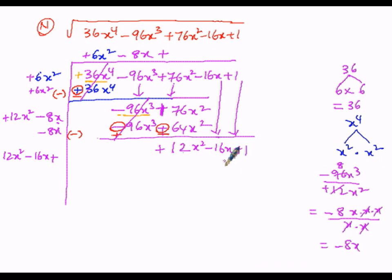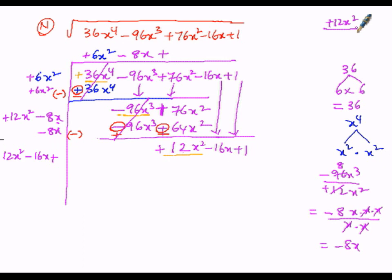In the new dividend, the first term is plus 12x squared. The first term of the new divisor is also 12x squared. To get the next quotient term, we divide the dividend's first term by the divisor's first term: plus 12x squared divided by plus 12x squared. The 12s cancel and x squared cancels, giving 1. So the new quotient term is plus 1.